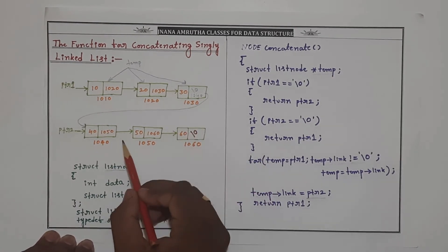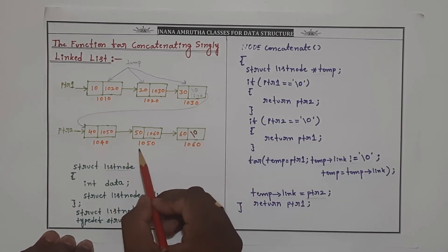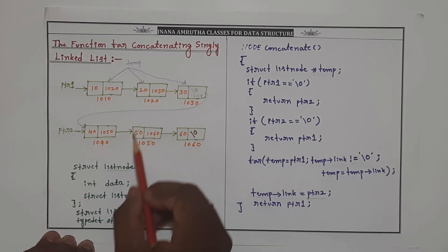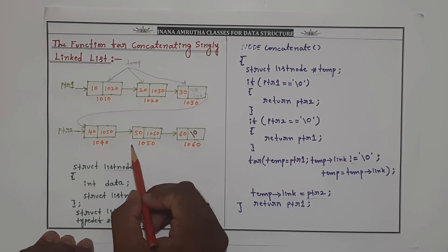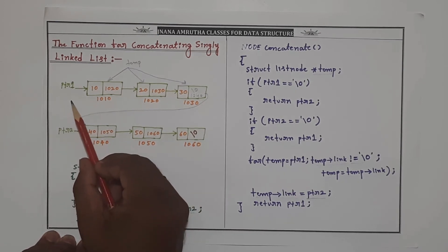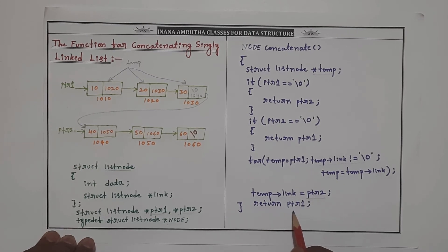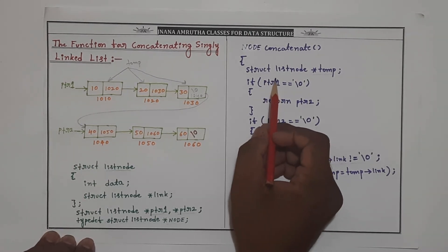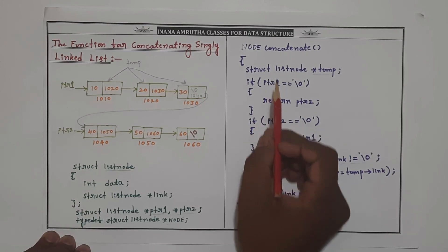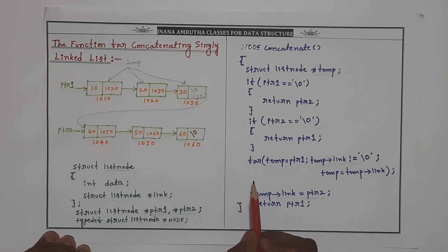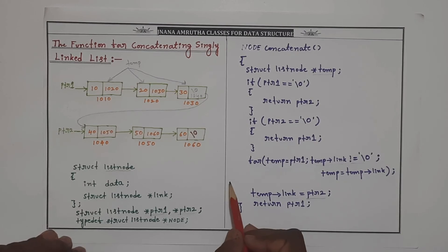By doing this, we are concatenating list 2 to list 1. The resultant list is now available in PTR1, so we return PTR1 from this concatenation function. Understood? Very simple. Thanks for watching — please like, share, and subscribe to the channel for more videos. Thank you.